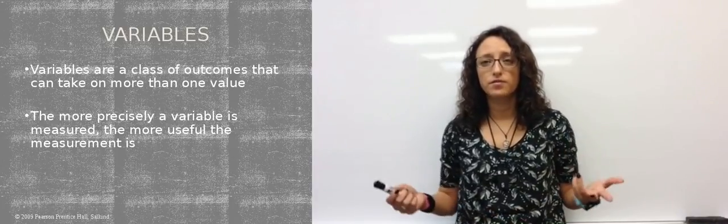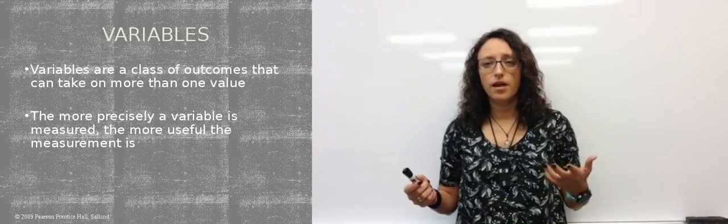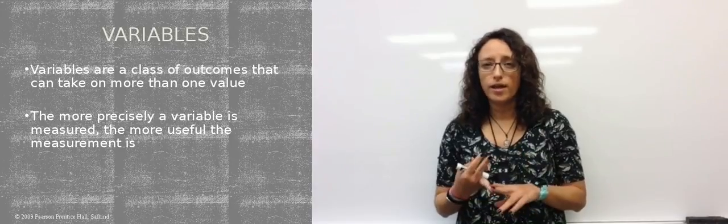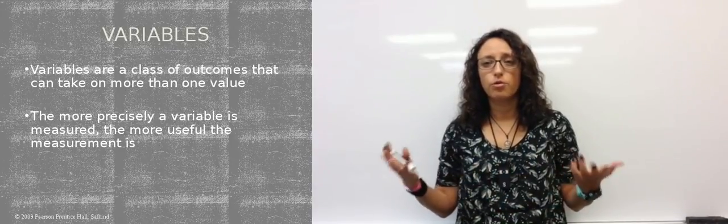Let's start with the basics. What is a variable? A variable is something that can take on more than one value. Examples of variables are things like height, weight, gender or sex. These are all things that can take on more than one value.